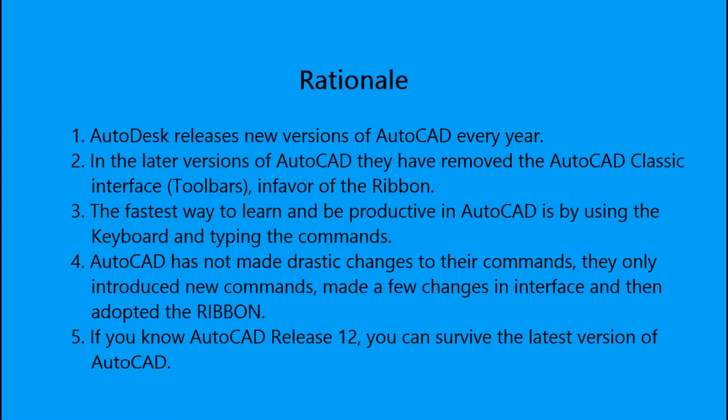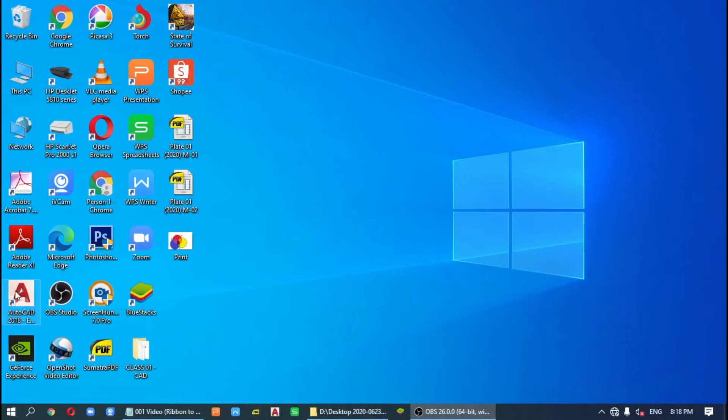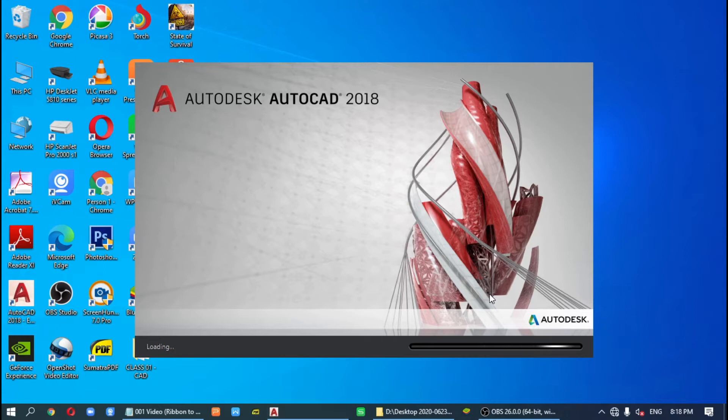Rationale: Number one, Autodesk releases new versions of AutoCAD every year. Number two, in the later versions of AutoCAD they have removed the AutoCAD classic interface or the toolbars in favor of the ribbon, which is what Microsoft introduced. Number three, the fastest way to learn and be productive in AutoCAD is by using the keyboard and typing in the commands. Before AutoCAD made drastic changes in their interface, they only introduced a few new commands and adopted the ribbon. This means that if you know AutoCAD 12, you can survive the latest version of AutoCAD.